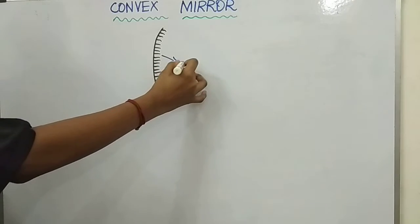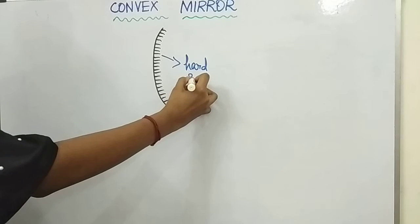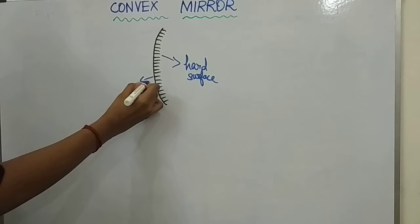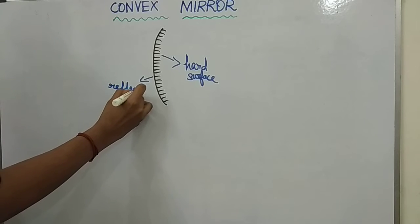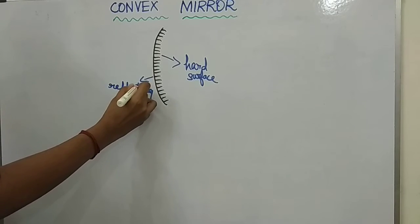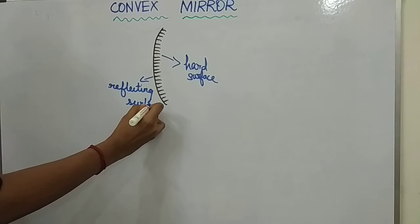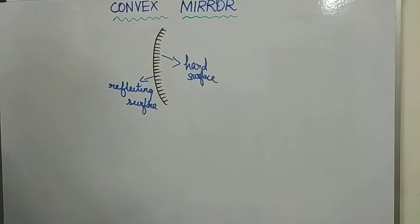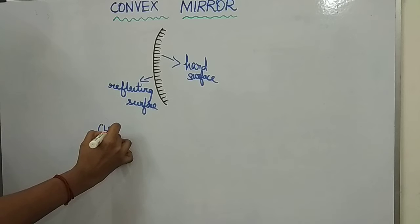This part is the hard surface. This part is the reflecting surface. The spherical mirror which is curved outward is called a convex mirror.